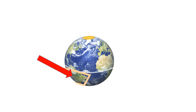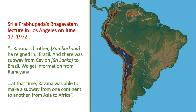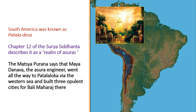Let's go on a little holiday to South America — with the disclaimer that this is nothing to do with the people living there today; we're talking about former yugas. Ravana's brother Kumbhakarna reigned in Brazil, and there was a subway from Ceylon — that's Sri Lanka — to Brazil, per information from the Ramayana. Ravana was able to make a subway from one continent to another, from Asia to Africa. South America was known as Pataladesh. Chapter 12 of the Surya Siddhanta describes it as a realm of Asuras. The Matsya Purana says that Mayasura, the Asura engineer, went to Patalaloka via the Western Sea and built three opulent cities for Bali Maharaj there. Thank you very much. Please keep in touch, and thanks for watching. Hare Krishna.